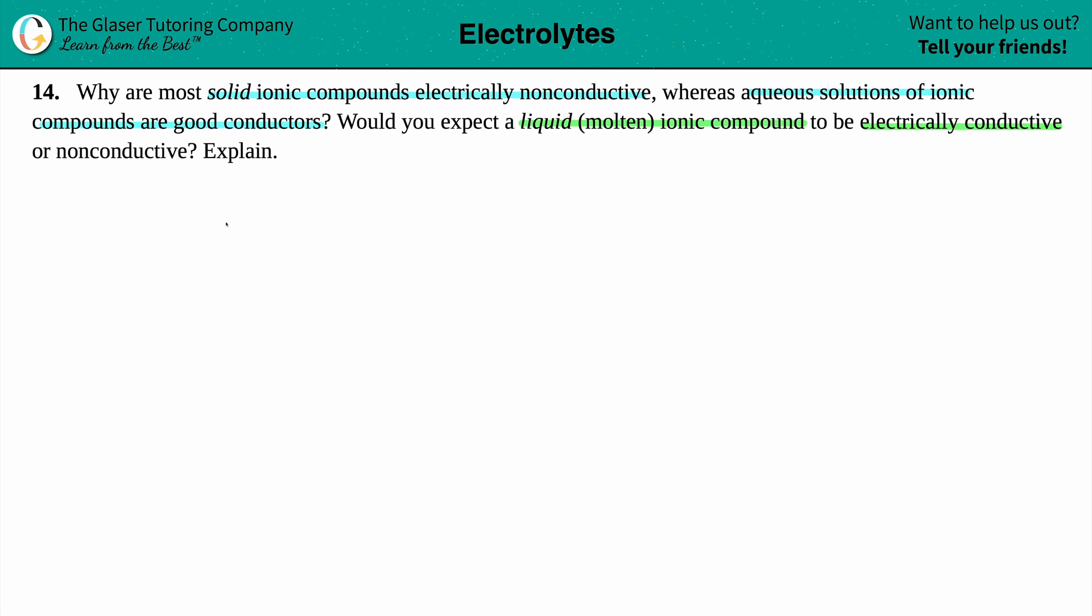So before we write out the three states, what I'm going to say is what constitutes something being electrically conductive. So if a species or a substance needs to conduct electricity, so become electrically conductive, this substance has to contain mobile species. It's a generally vague term because we're trying to talk about everything that can conduct electricity.